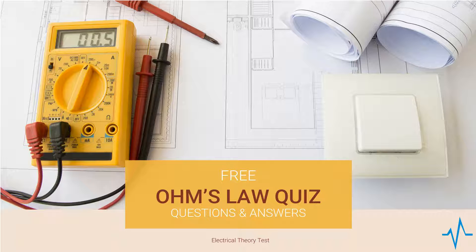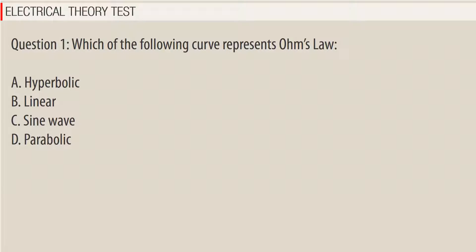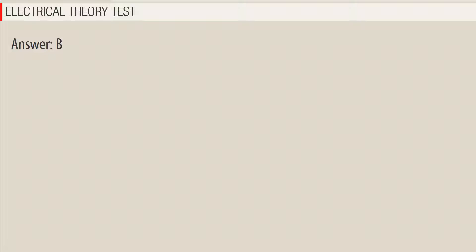Question 1: The property of a substance which offers opposition to the flow of current is called — a) friction, b) resistance, c) current, d) m4. Which of the following curve represents Ohm's Law? a) hyperbolic, b) linear, c) sine wave, d) parabolic. Answer: B.